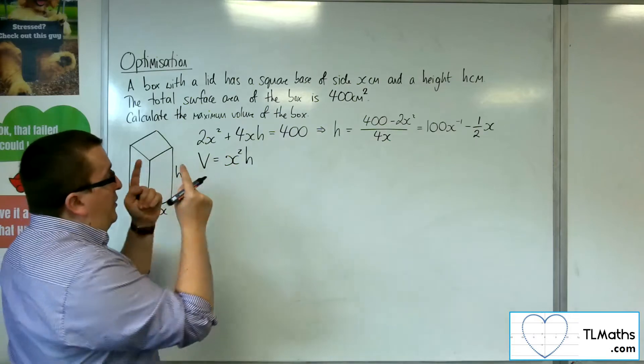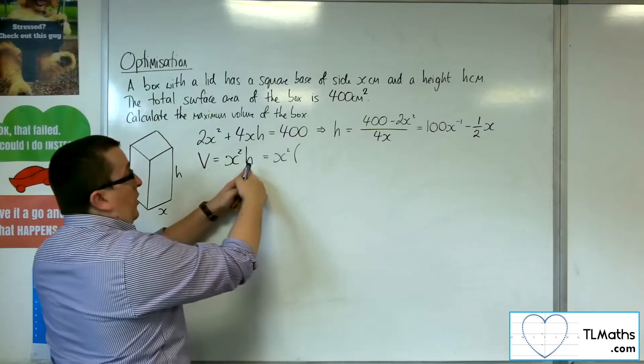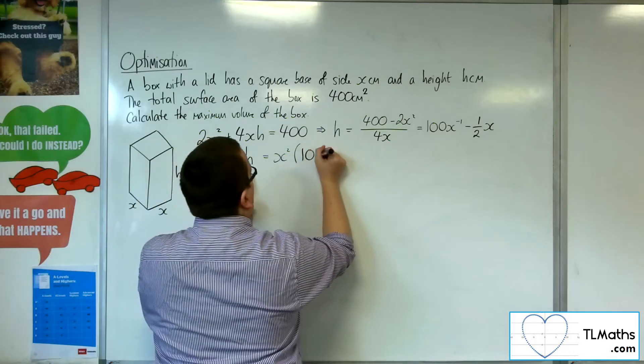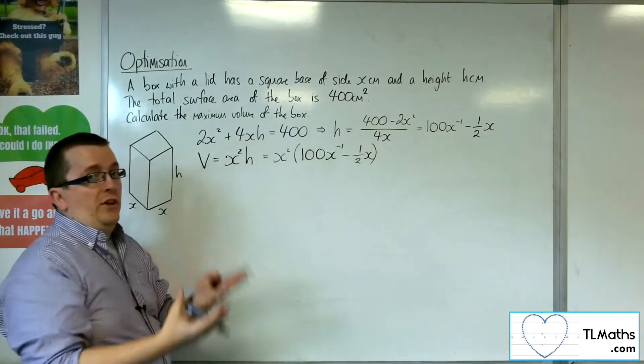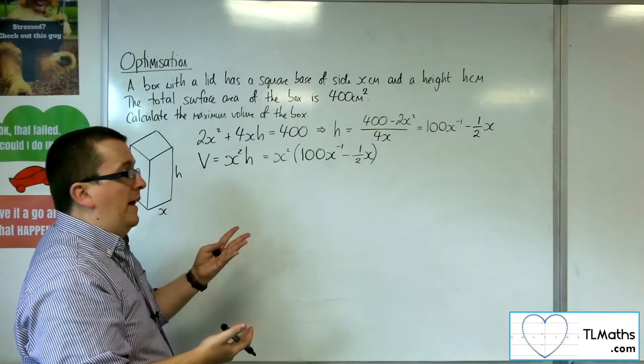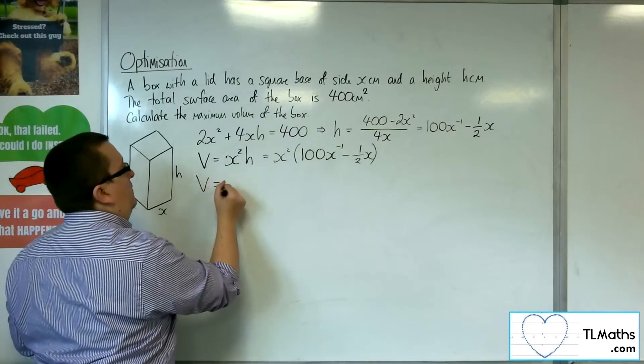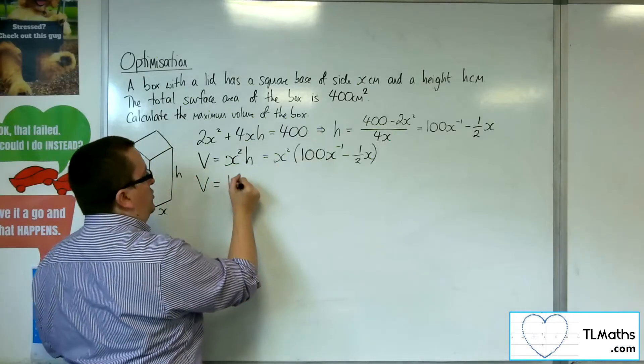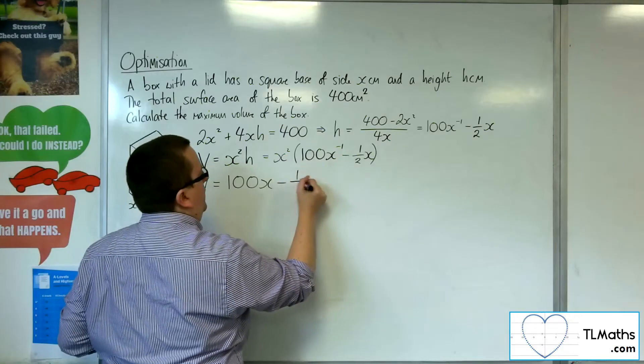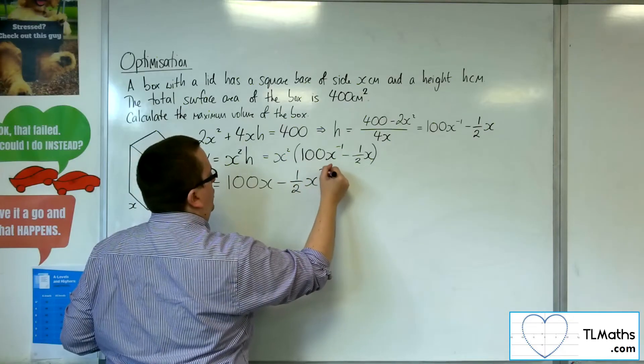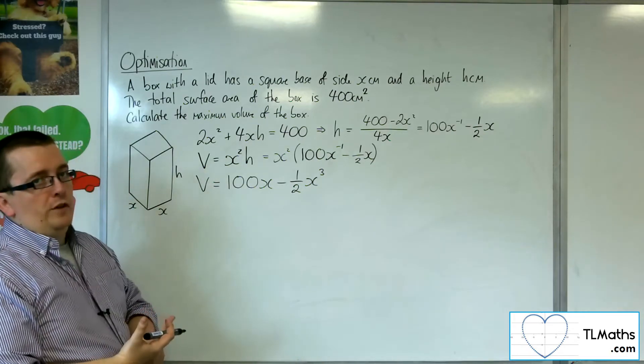I'm then going to substitute that into the volume equation, so x squared times h. Now I have an equation that is in terms of x. I don't want to leave it like that - I'm going to multiply it through. So volume equals x squared times 100x to the minus 1, which is 100x, and x squared times minus half x, so minus half x cubed.